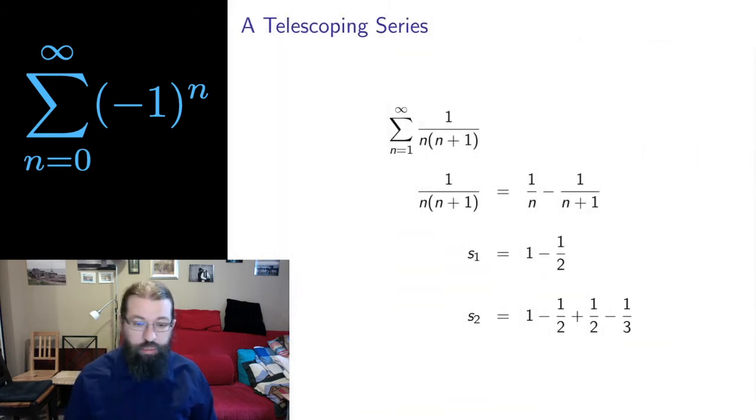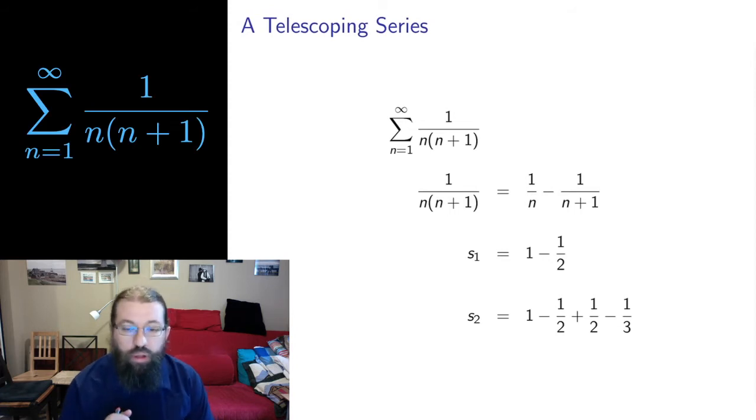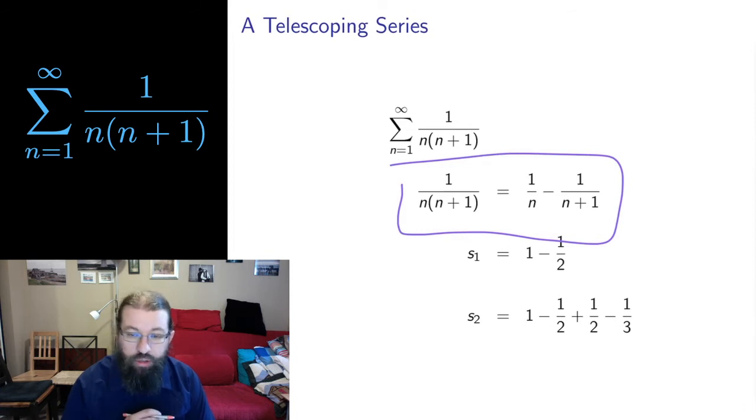Here's another example. This is a type of series called a telescoping series and we'll see that once we get into the partial sums. 1 over n times n plus 1, n equals 1 to infinity. This complicated denominator we can pull apart into simpler pieces using partial fractions, which was a technique we used in calculus 2 for integrals of rational functions. We break 1 over n times n plus 1 apart into two pieces. And then we can look at the partial sums.